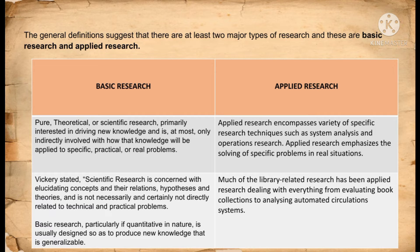The general definition suggests that there are at least two major types of research: basic research and applied research. First is basic research. Basic research is pure, theoretical, or scientific research, primarily interested in deriving new knowledge, and is, at most, only indirectly involved with how that knowledge will apply to specific, practical, or real problems. Basic research is also particularly, if quantitative in nature, usually designed to produce new knowledge that is generalizable. In short, basic research is a systematic study directed toward greater knowledge or understanding of fundamental aspects and their application.